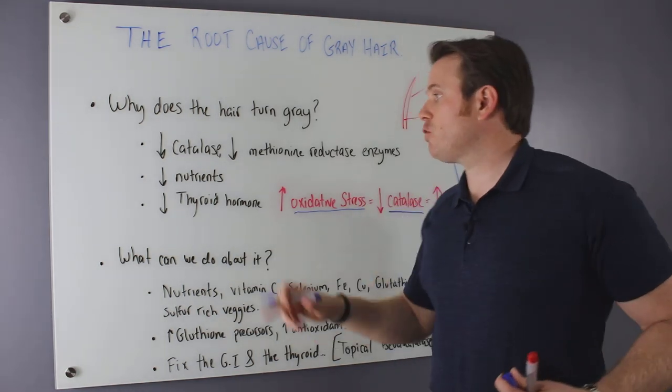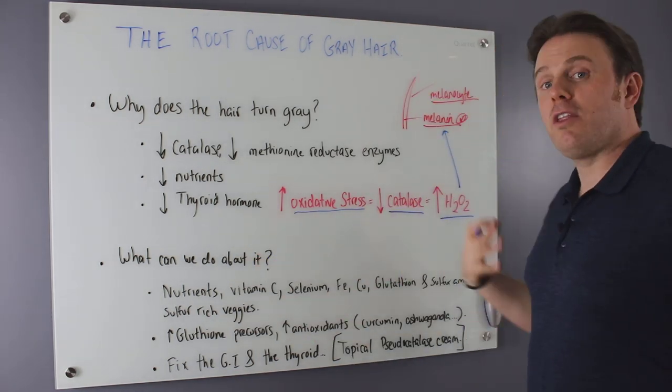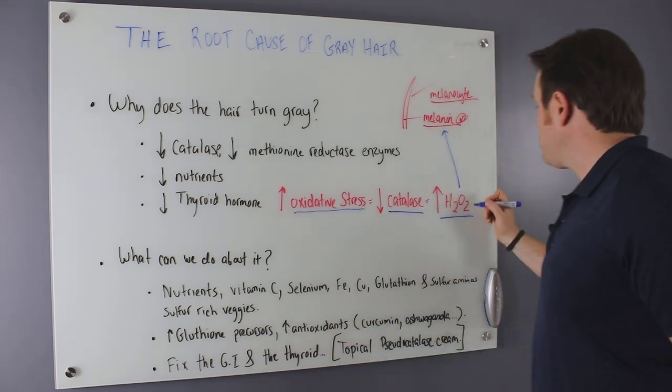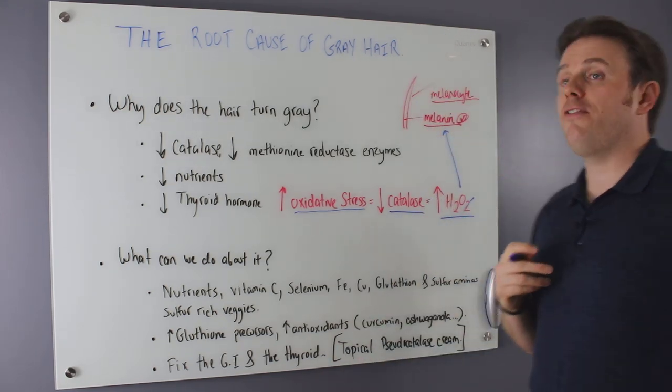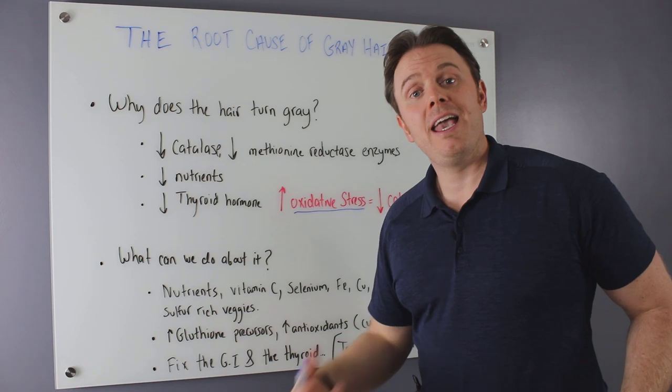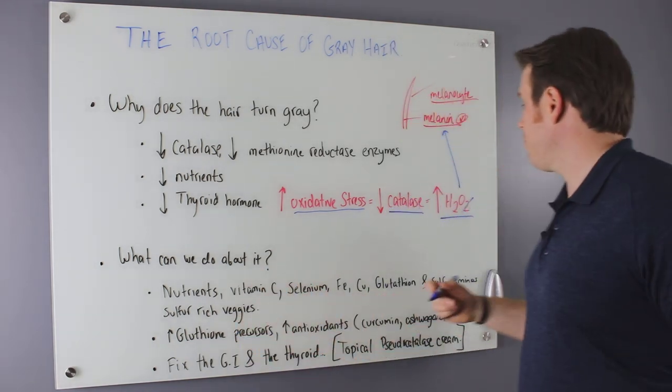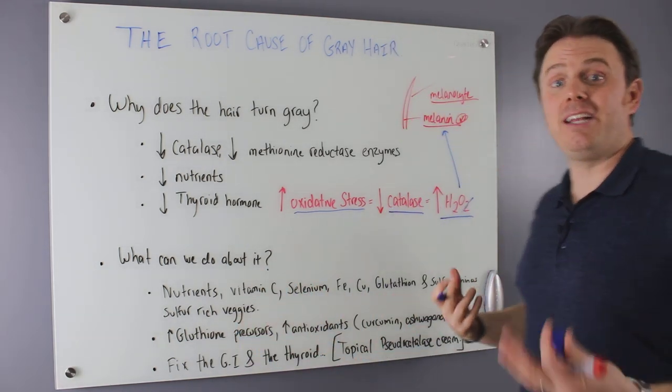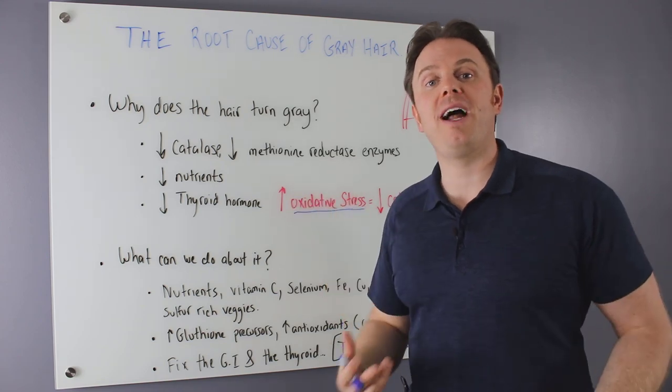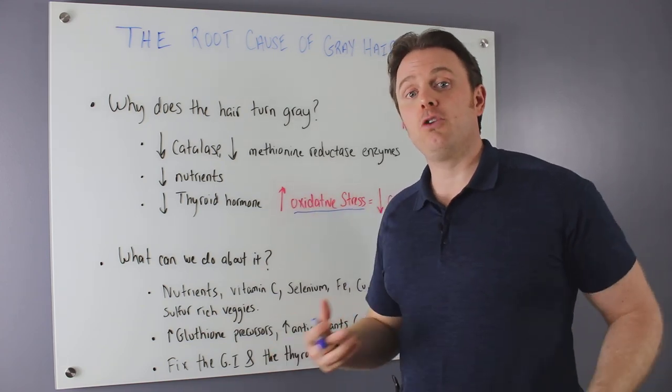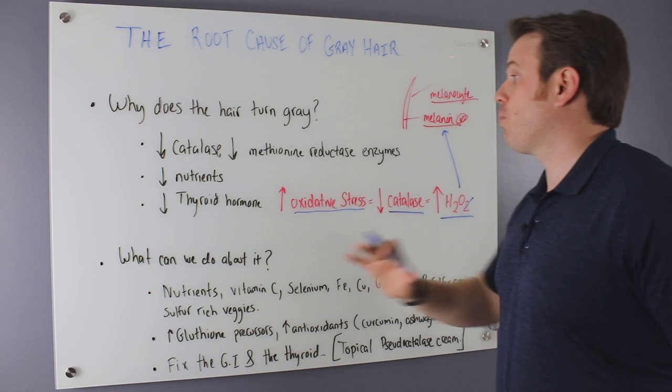So when we have adequate levels of glutathione, for instance, glutathione comes in. It knocks that extra oxygen off the hydrogen peroxide and it turns it into water, right? And that's why we need glutathione because that helps neutralize the hydrogen peroxide, turns it into water where our body can flush it out. No problems.